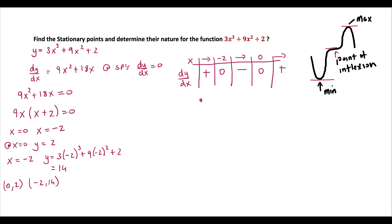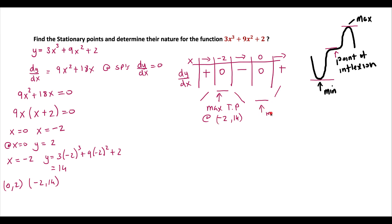So from the nature table we have: a positive gradient, then 0, then a negative gradient, then 0, then a positive gradient. This tells us we have a maximum turning point at (−2, 14) and a minimum turning point at (0, 2).